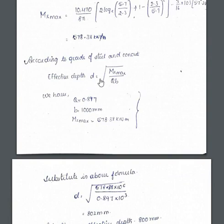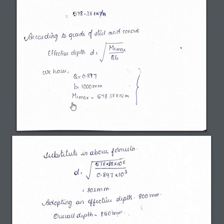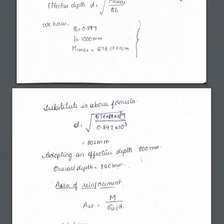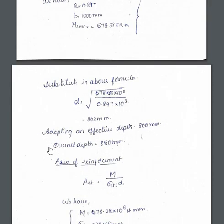According to the grade of steel and concrete, the effective depth is: d = √(Mr_max / (q × b)), where q = 0.897 and b = 1000 mm. With Mr_max = 578.38 kN·m (multiplied by 10⁶ to convert to N·mm), this gives d = 802 mm. Adopt effective depth as 800 mm and overall depth as 850 mm, assuming an effective cover of 50 mm.